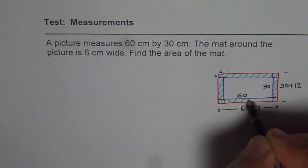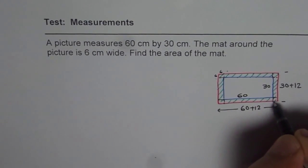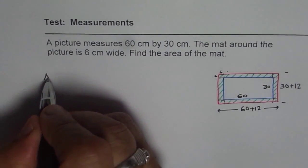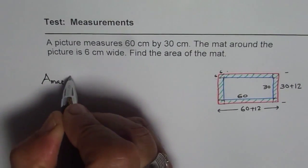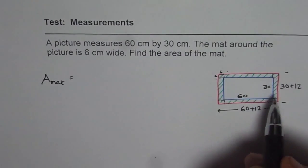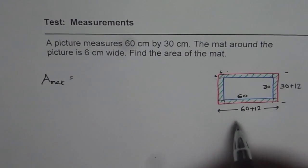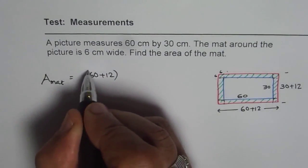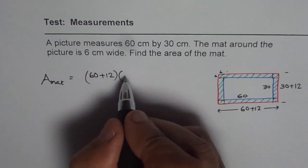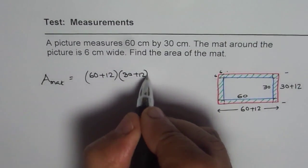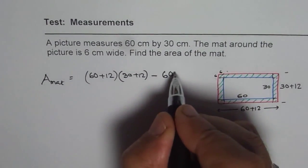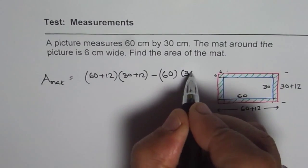So we can easily find this by taking the difference of the two areas. So we can say that the area of the mat equals the outside area which is, let me write, 60 plus 12 times 30 plus 12, take away area of the picture which is 60 times 30.